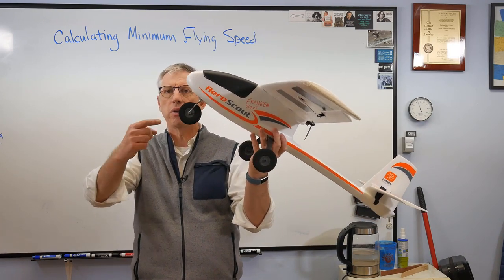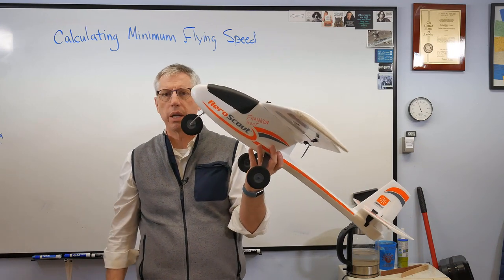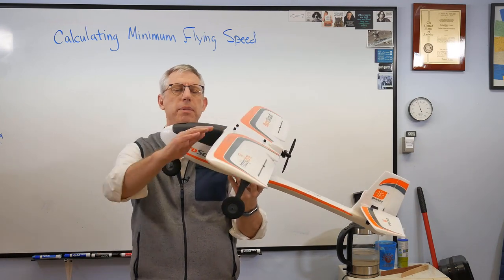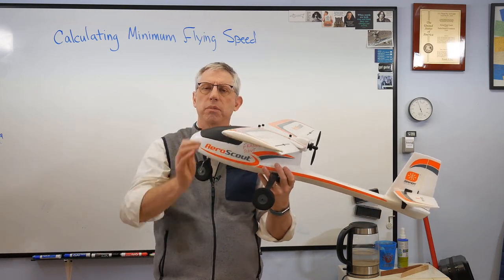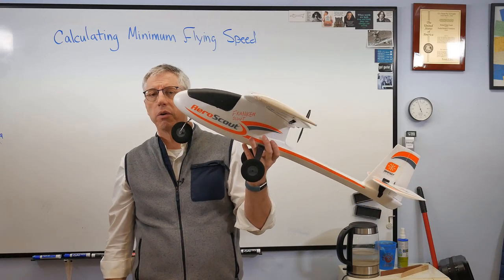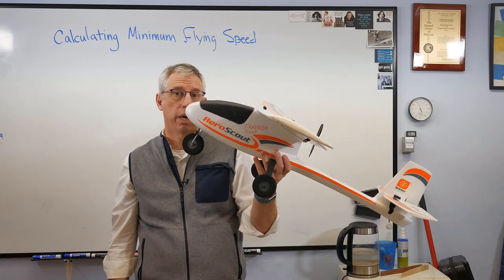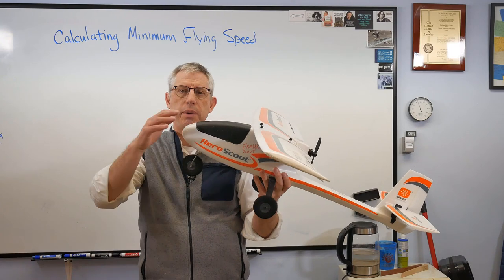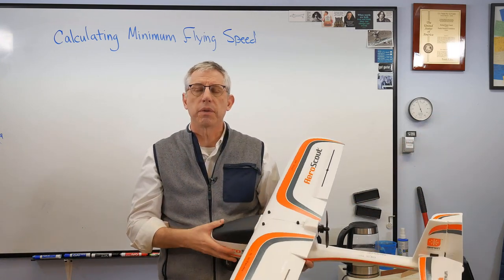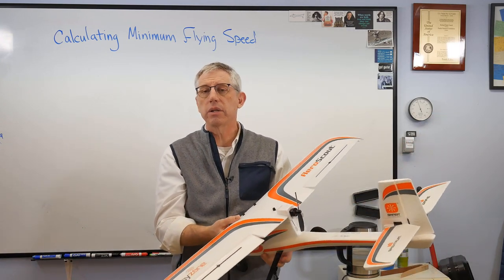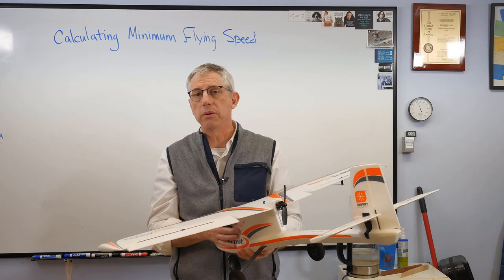Eventually, this angle gets so high that the air can't go over the wing anymore, and it stalls. What happens is the air separates from the top of the wing, and the lift coefficient goes down sometimes by quite a lot. Well, that peak there, the maximum angle, that's called CL max. That's the maximum lift coefficient the wing can generate.